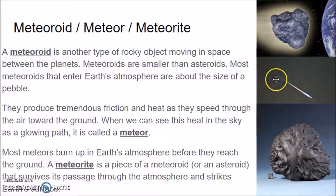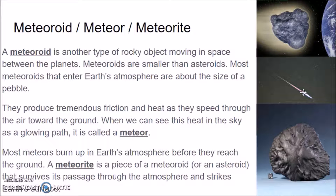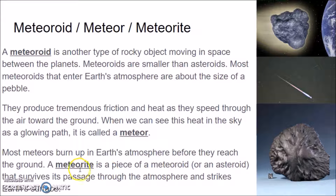A meteoroid that has entered our atmosphere is going really fast, so it gets hot and starts glowing red — we see that as a meteor. Most meteors burn up completely in the atmosphere because they get so hot and they're so tiny. If a meteoroid streaking through the atmosphere as a meteor is big enough to not burn up and hit the ground, the piece left over when it hits the ground is called a meteorite — a piece of a meteoroid that has survived its passage through the atmosphere and strikes Earth's surface.